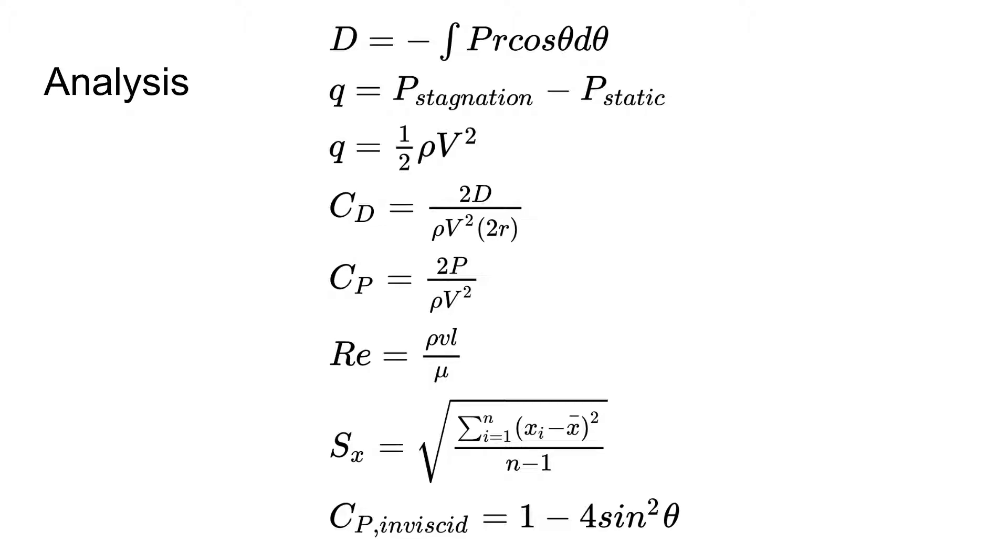Drag is calculated by integrating the pressure at a given point on the cylinder around the whole surface. The pressure is multiplied by a cosine to get the magnitude of the force in the horizontal direction. The negative sign indicates that the drag force is in the opposite direction of the apparent motion of the cylinder.